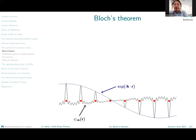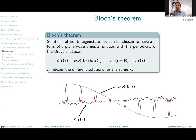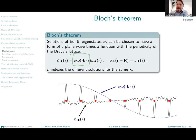It turns out that our solutions in this case can be described as so-called Bloch states. Bloch's theorem states that the solutions of the Schrödinger equation for a single electron in a periodic potential are of the form: a product of a plane wave and a lattice-periodic function. The solution itself does not have to be lattice-periodic, but it is expressed as this product of a lattice-periodic function u_{n,k} and a plane wave e^{ikr}.